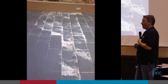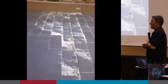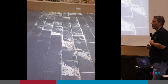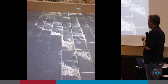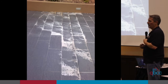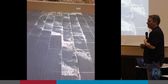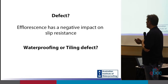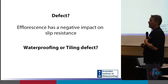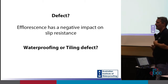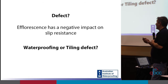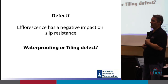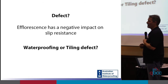Here's another thing that quite often happens externally, and that's efflorescence going across tiles. I'm sure you've all seen it before. It doesn't let water into the building — nowhere near a window or a door — but is it a defect? Seeing a lot of nods: yes it is. The reason why it is, is that efflorescence has a negative impact on the slip resistance of the tiles. But the big question is: who's responsible? Is it a tiling or is it a waterproofing defect?